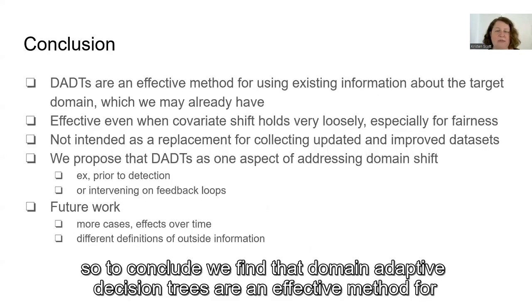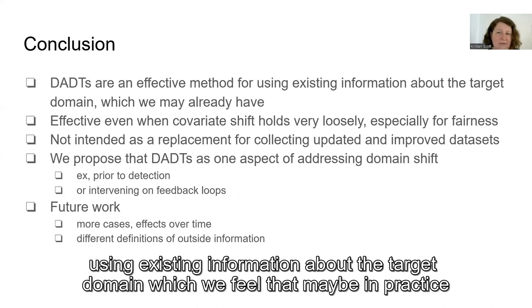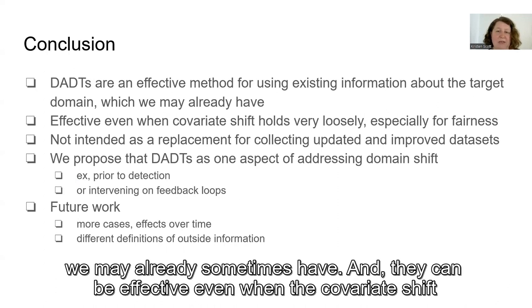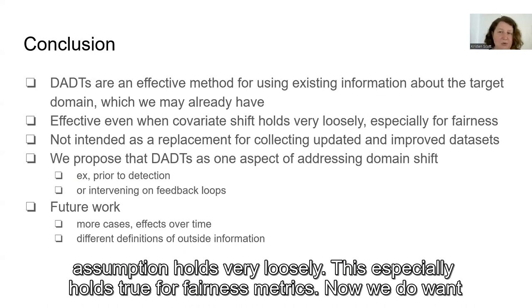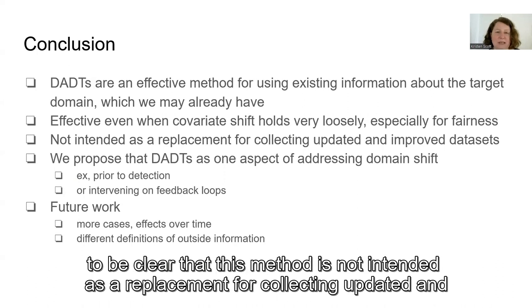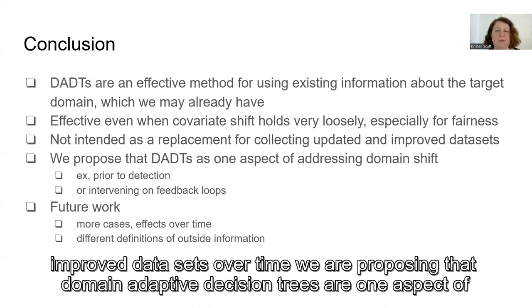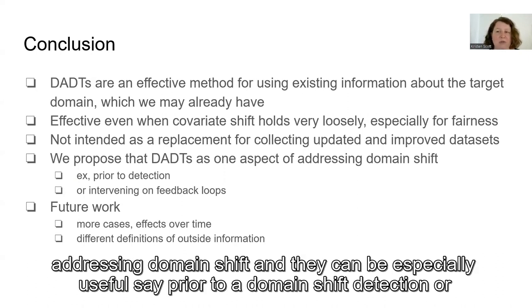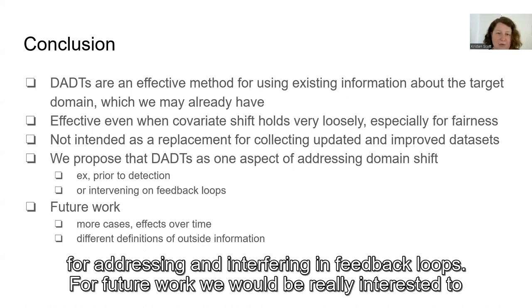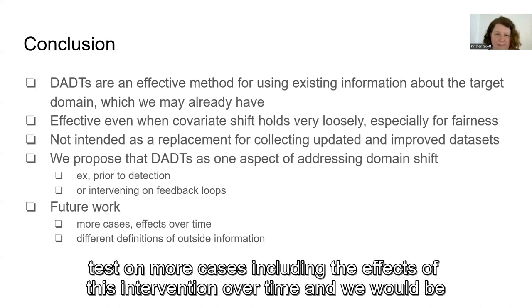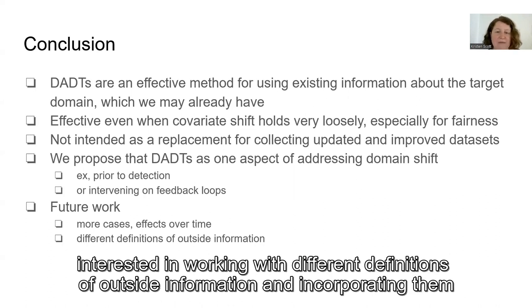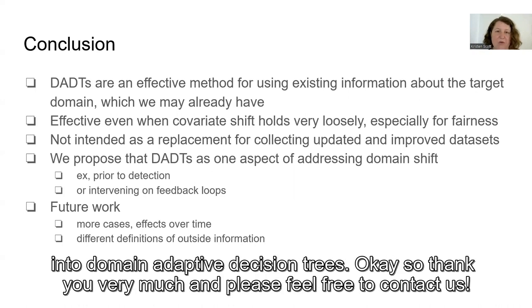To conclude, we find that domain adaptive decision trees are an effective method for using existing information about the target domain, which in practice we may already sometimes have. They can be effective even when the covariate shift assumption holds very loosely, and this especially holds true for fairness metrics. This method is not intended as a replacement for collecting updated and improved datasets over time. We propose it as one aspect of addressing domain shift — especially useful prior to domain shift detection or for addressing feedback loops. For future work, we'd be interested in testing on more cases, including effects over time, and incorporating different definitions of outside information into domain adaptive decision trees.